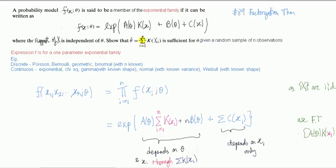the sum of K(x_i) is sufficient for θ given a random sample of n observations. To stress again, this form here is the one-parameter exponential family. It covers, for the discrete cases, distributions including Poisson, Bernoulli, geometric, and binomial where n is known.